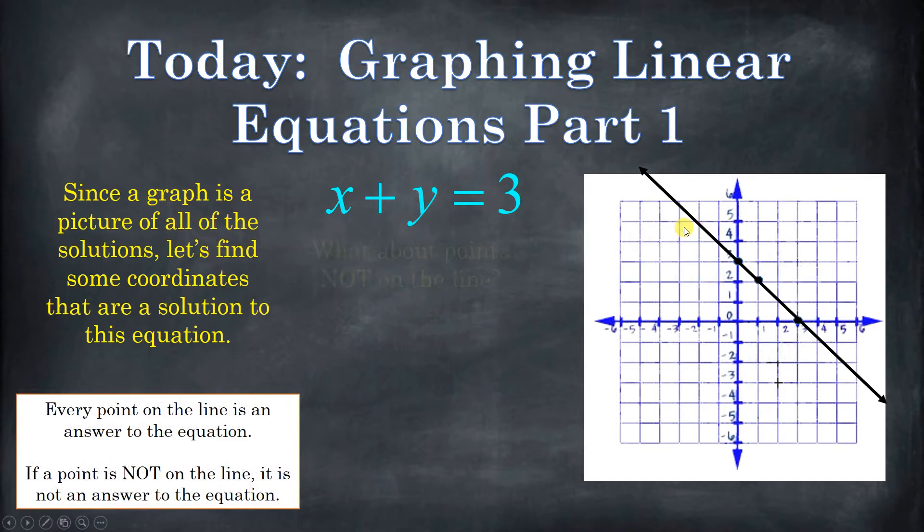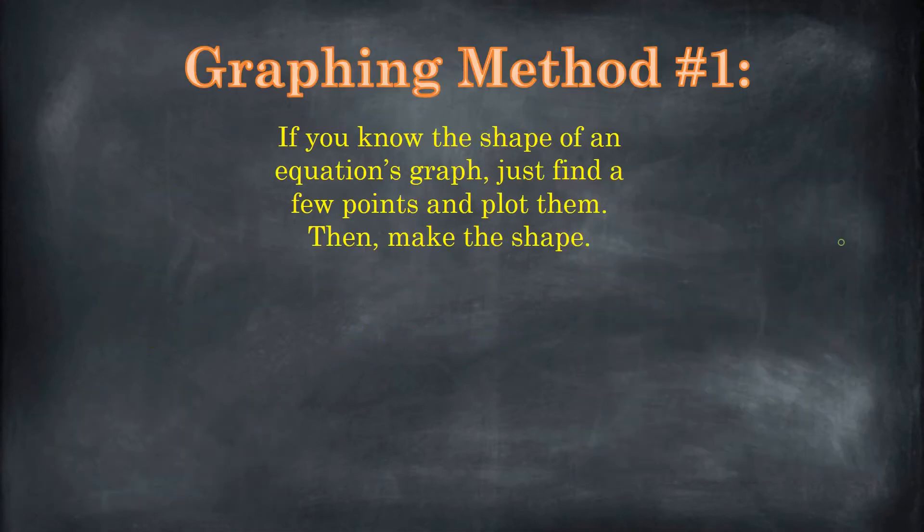Now, if there's a point that's not on the line, then it is not a solution. So for example, this point right here, 5 comma 4, right? That is obviously not on the line. 5 is x. 4 is y. 5 plus 4 is 9. That's not 3. This is not a value or a set of values that makes this equation true. That's why this is not a solution. And we didn't even need to plug it in. We could just see that it's not on the line. Therefore, it's not a solution.